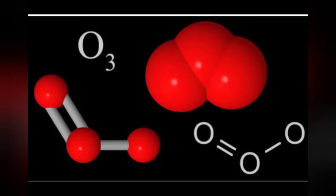How is ozone formed? Ozone is a molecule made up of three oxygen atoms, often referenced as O3. Ozone is formed when heat and sunlight cause chemical reactions between oxides of nitrogen and volatile organic compounds, which are also known as hydrocarbons. This reaction can occur both near the ground and high in the atmosphere.